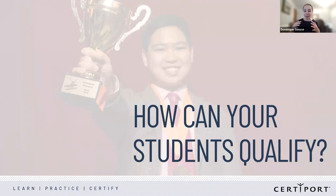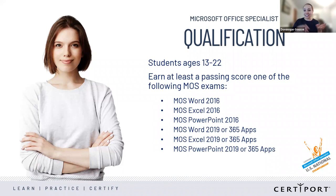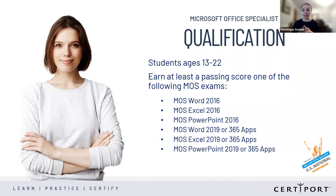Now let's talk about how your students can qualify. In order to qualify for the Microsoft Office Specialist Championships, students must be between the ages of 13 and 22 years old — that's about middle school to graduating college. We have students all over the board; sometimes a student from middle school will beat everyone out and take home the national title, sometimes even the world championship title. As long as they're between 13 and 22, they can qualify.